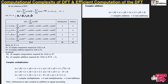Similarly, we will get equations for k equals 1, k equals 2, and k equals 3. For all four values of k, we get four multiplications and three additions each. So if we add all these multiplications, the total number of multiplications will be equal to 16 and the total number of additions will be equal to 12. Hence, for N equals 4, the number of complex multiplications required for x of k is 16 and complex additions is 12.